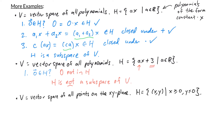In this last example, we are looking at the vector space of all points on the xy-plane, and H is the subset of points where the first coordinate is greater than or equal to zero and the second coordinate is less than or equal to zero. For the first condition, is the zero vector in H? The zero vector is the origin (0, 0), and it is in H because its first coordinate is ≥ 0 and its second coordinate is ≤ 0.